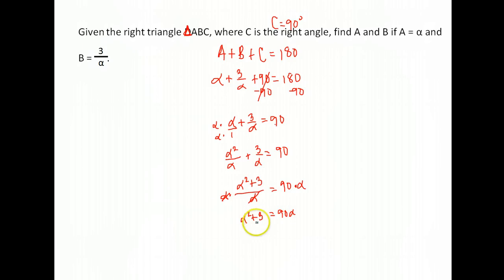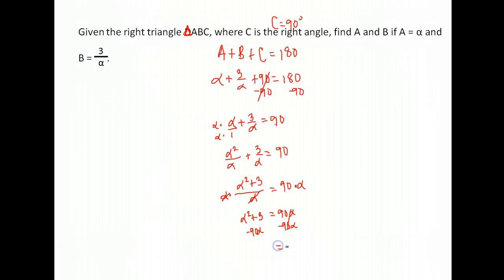We're in a similar situation as the previous problem — we have alpha squared and an alpha, so we'll need factoring or the quadratic formula. Get everything equal to zero: subtract 90 alpha from both sides. Writing in standard order: alpha squared minus 90 alpha plus 3 equals zero. We try to factor, but there are no factors of 3 that add to negative 90, so we can't factor.